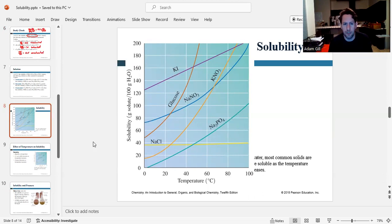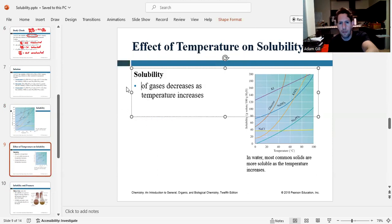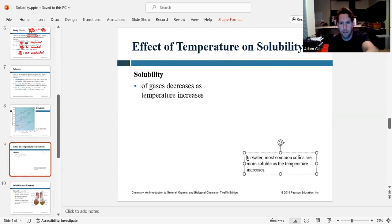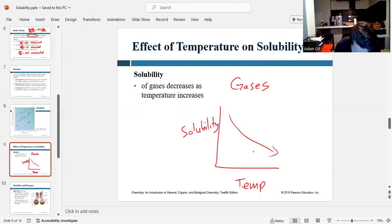Now, the opposite trend is true for gases. And so if we're talking about gases, you would have a trend that looks like this. So as temperature increases, solubility would decrease. And so gases are more soluble at colder temperatures.